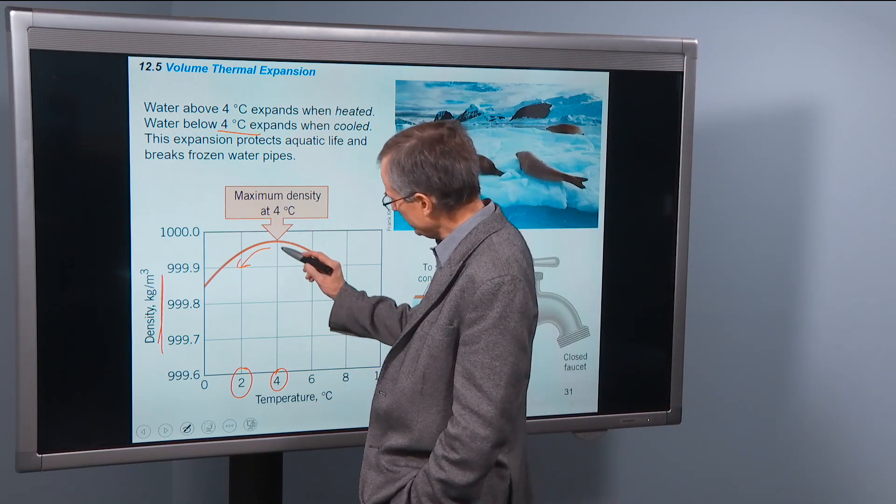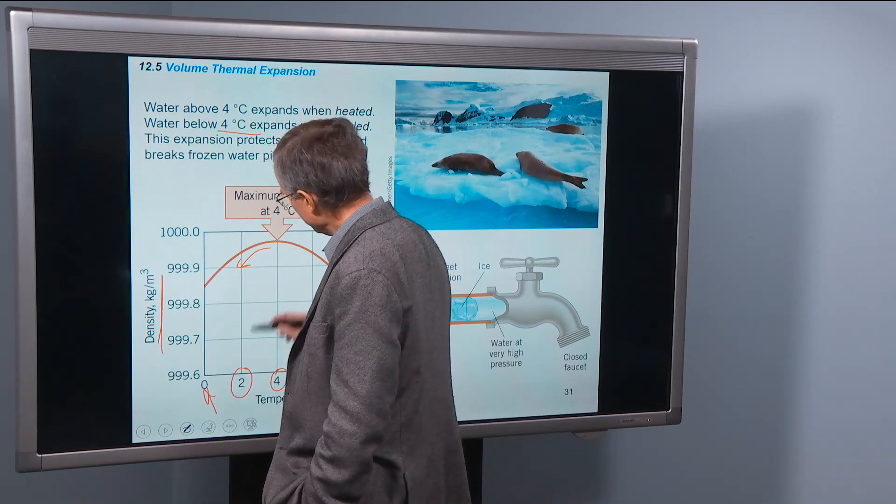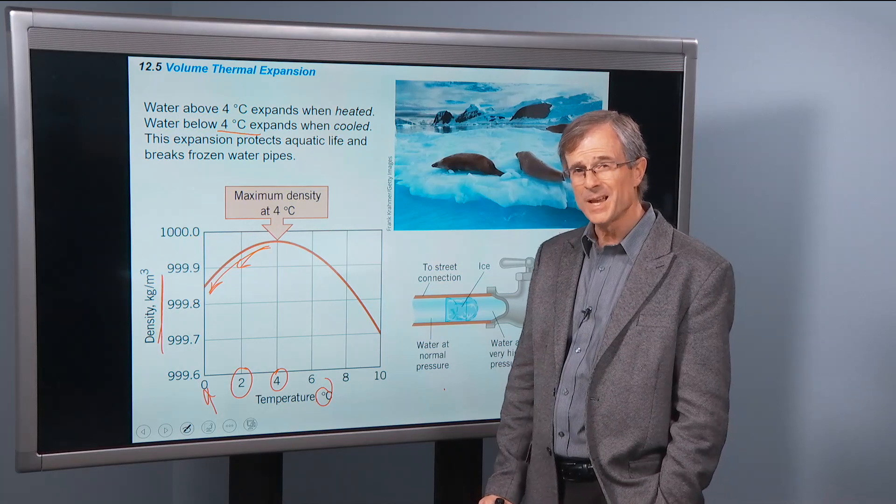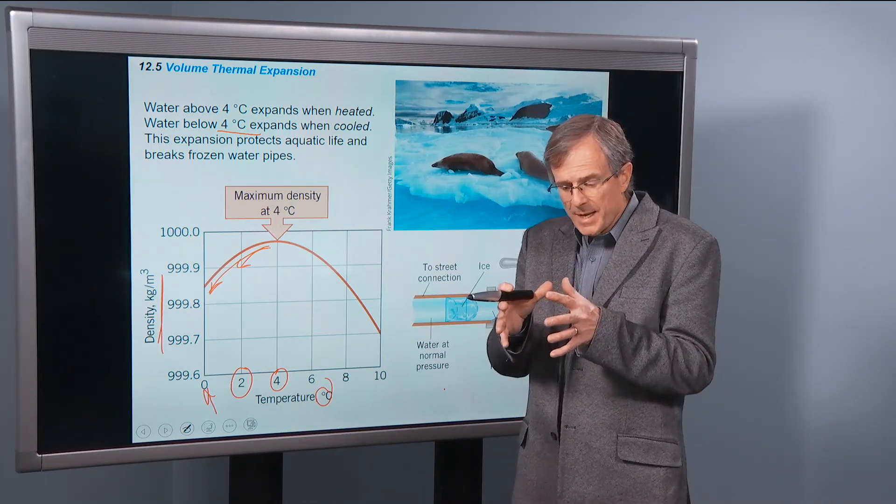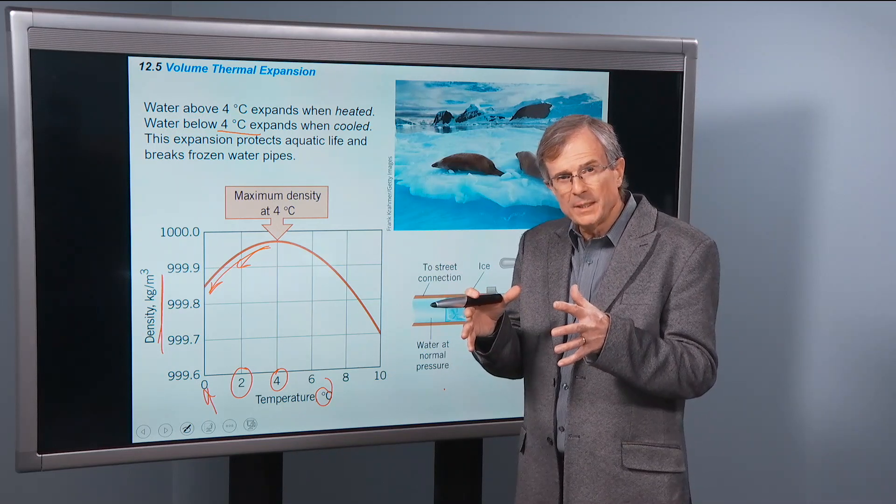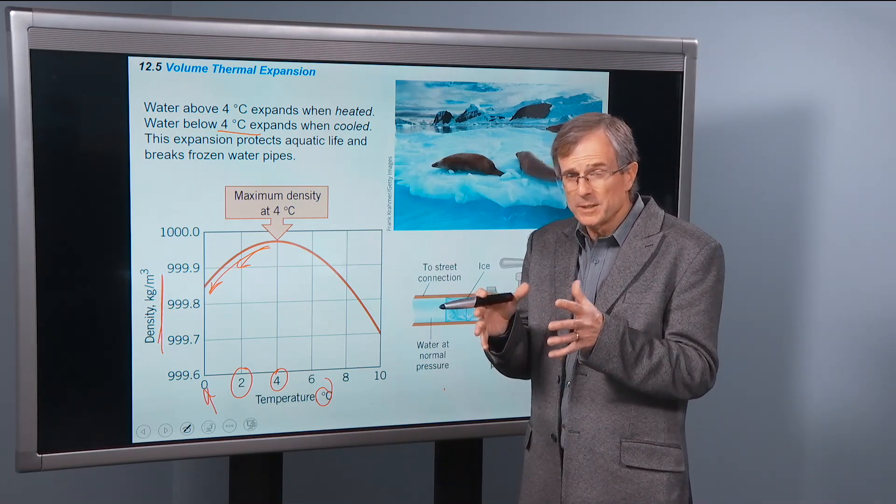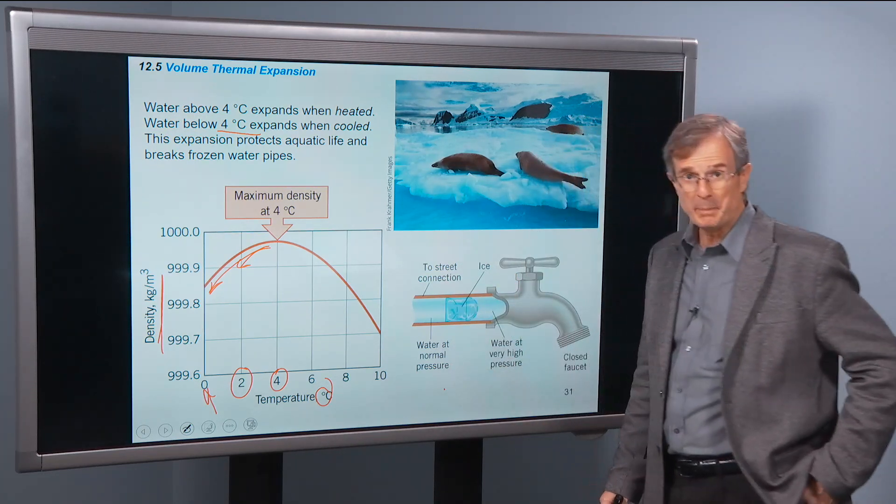So you're talking about water at a high temperature. It freezes and becomes ice. As we're going down towards zero degrees, here's the freezing point. As we're going down toward this freezing point, the density gets less. It expands. So that ice has a lower density than the water just before it froze. It expands, and that expansion is enough to burst pipes. So that's bad.